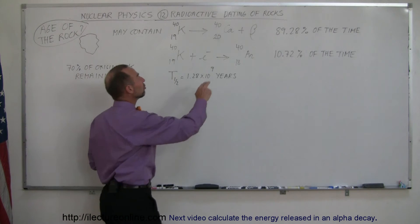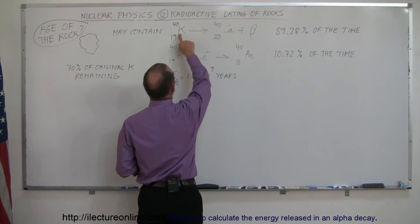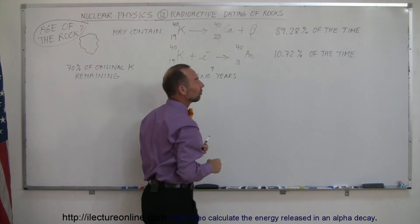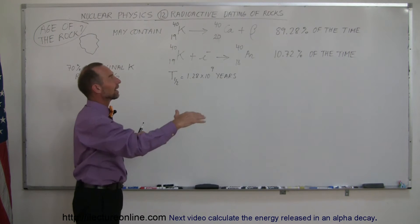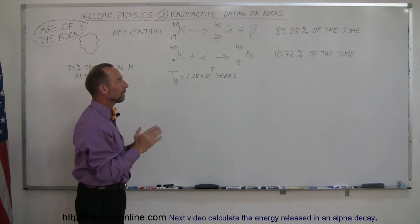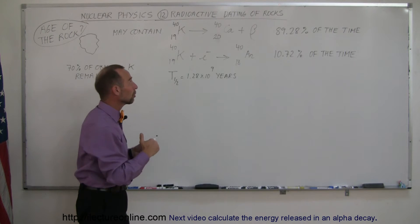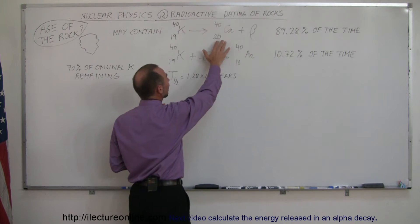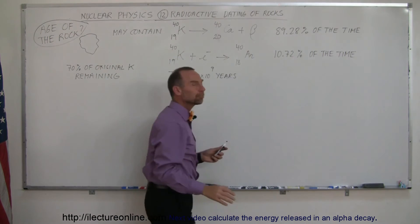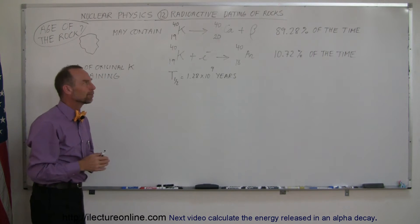One of the ways it ejects a beta particle and therefore turns potassium into calcium, because one of the neutrons will eject an electron, which is called a beta particle, turn itself into a proton, and thus become calcium. That process will happen 89.2% of the time.